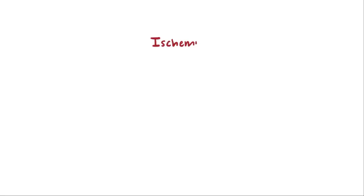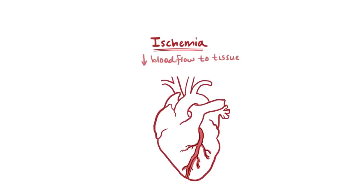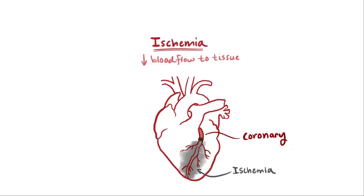When we talk about ischemia, we're usually talking about a lack of blood flow to a specific area of tissue. With a heart attack, for example, a coronary artery in the heart gets blocked and supplies the left ventricle with blood, so that localized area of heart tissue doesn't get enough blood and oxygen, and that damage is localized to that left ventricle.